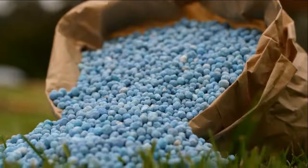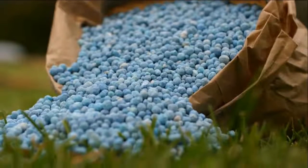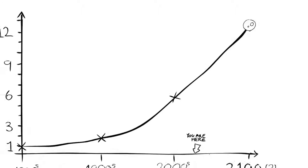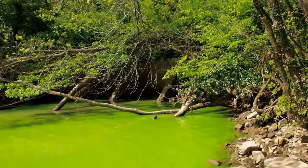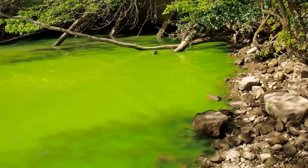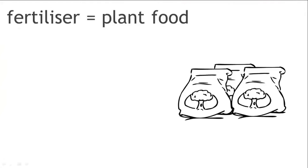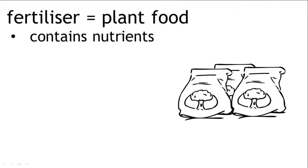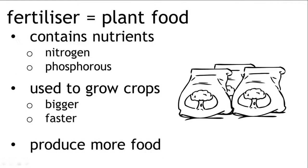Since we learned how to make fertilisers efficiently on a large scale, we've been able to grow many more crops, and therefore the human population has risen dramatically. There can be problems with putting too much fertiliser into a natural system, and some of the problems with fertilisers are explained in other videos. So, a fertiliser is a plant food that contains nutrients such as nitrogen and phosphorus, and we use it to grow our crops bigger and faster so they produce more.